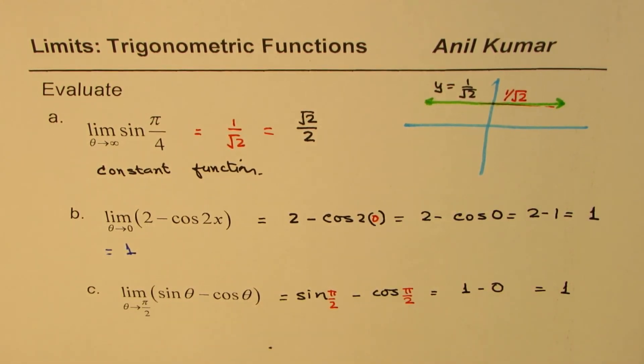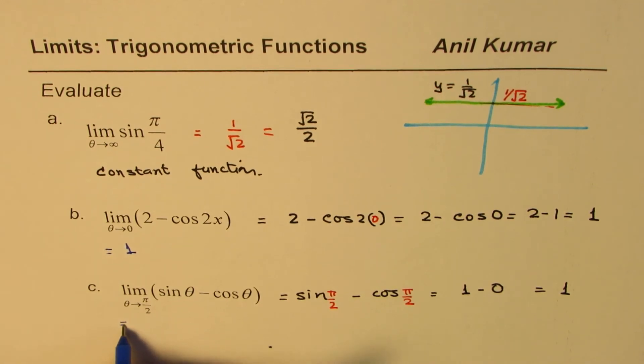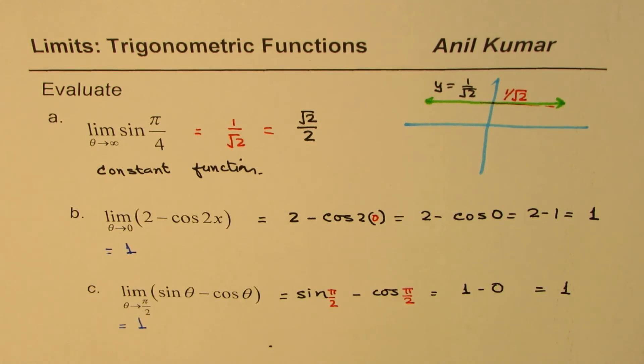So we get 1 minus 0, which is 1 and the answer for part c is equals to 1. So that is how you can find limit of these trigonometric functions.